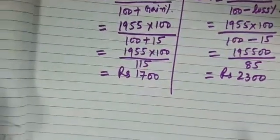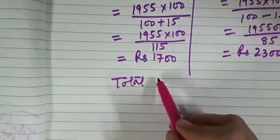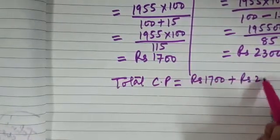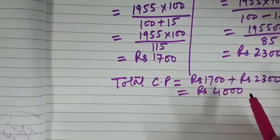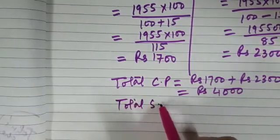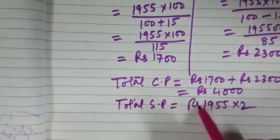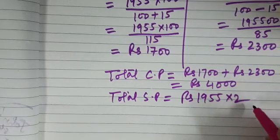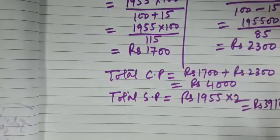Now tell me what will be the total cost price. Let us now look into the whole transaction. Total CP is rupees 1700 plus rupees 2300, so that gives us rupees 4000. And what is the total selling price? That is 1955 into 2 because he has sold both the watches at 1955 each.